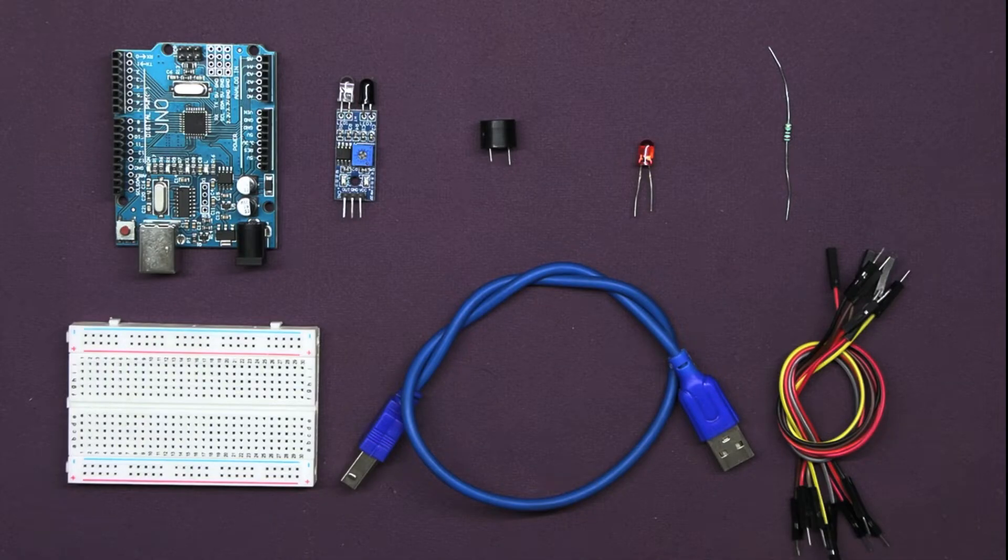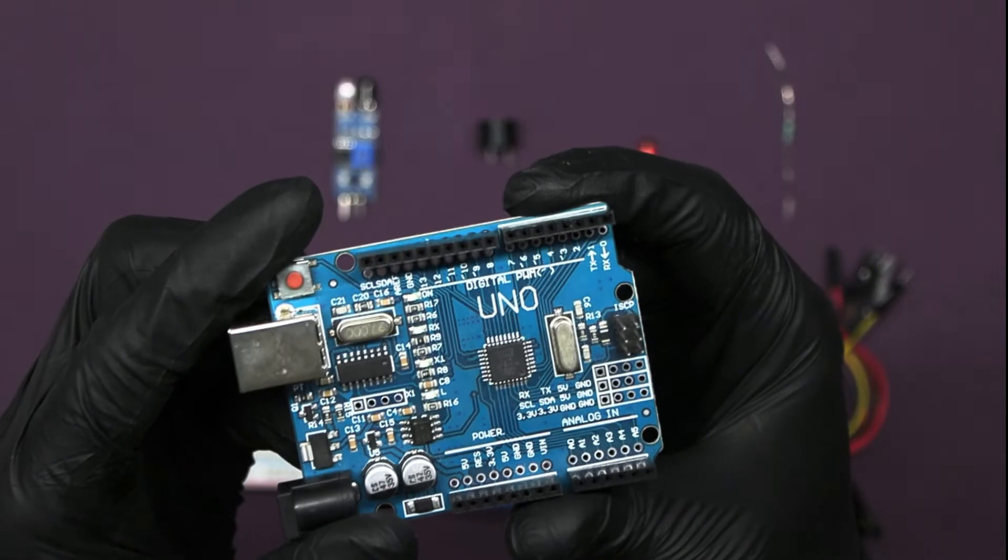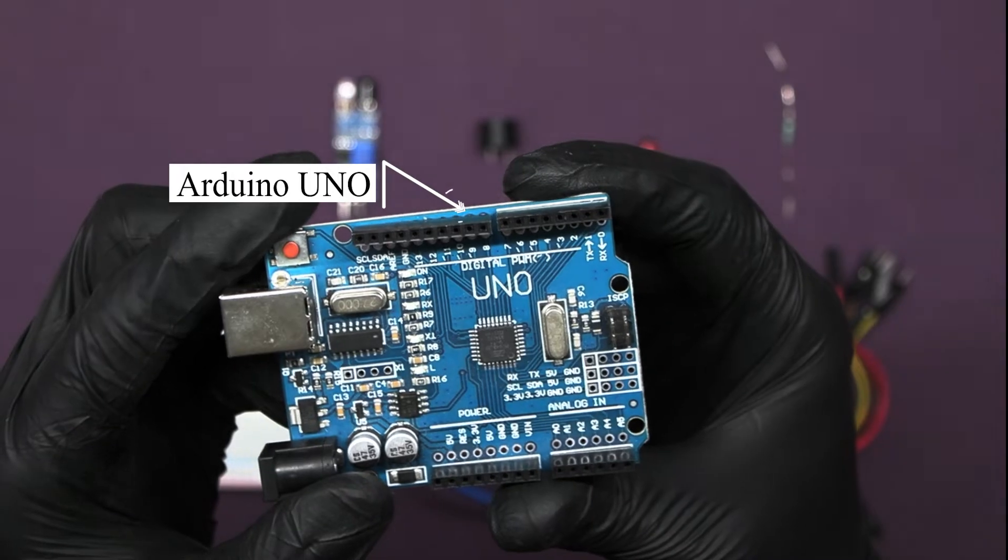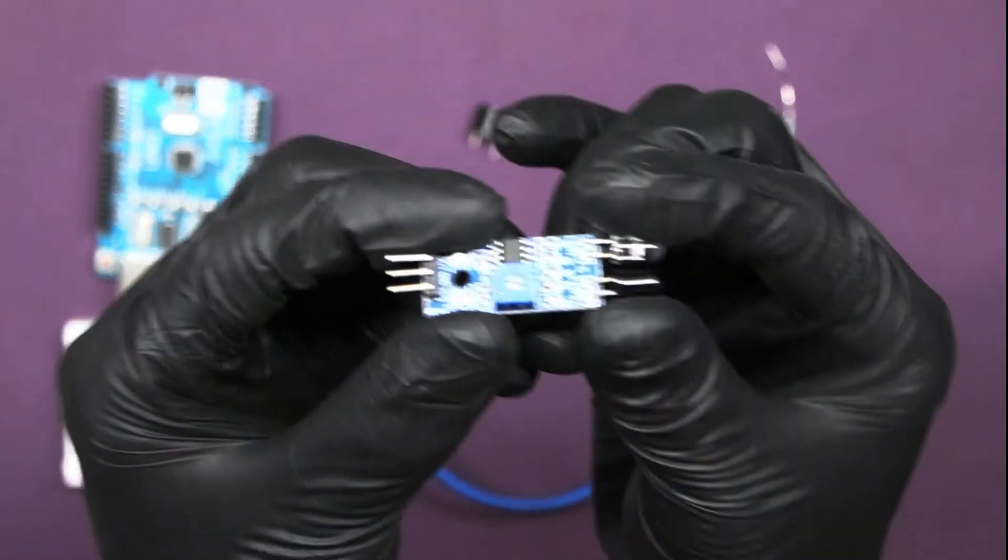Alright, here are the components we'll be using for this project. Arduino UNO which is used to control our LED and buzzer. One IR sensor having three pins.